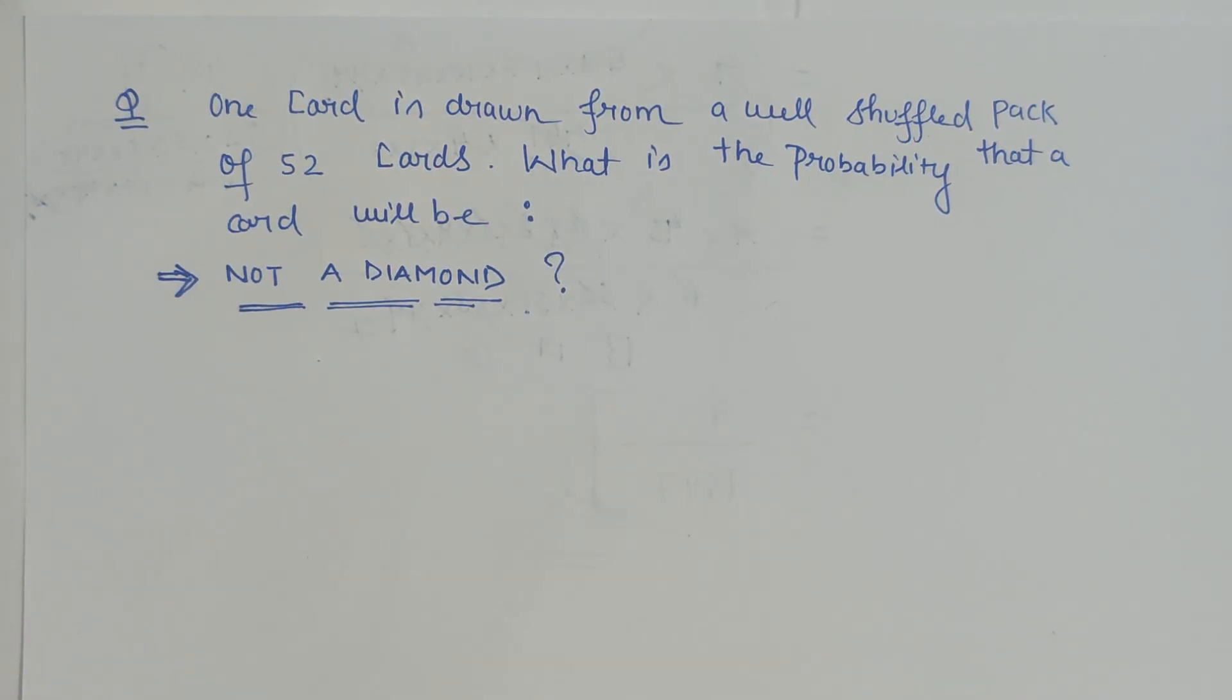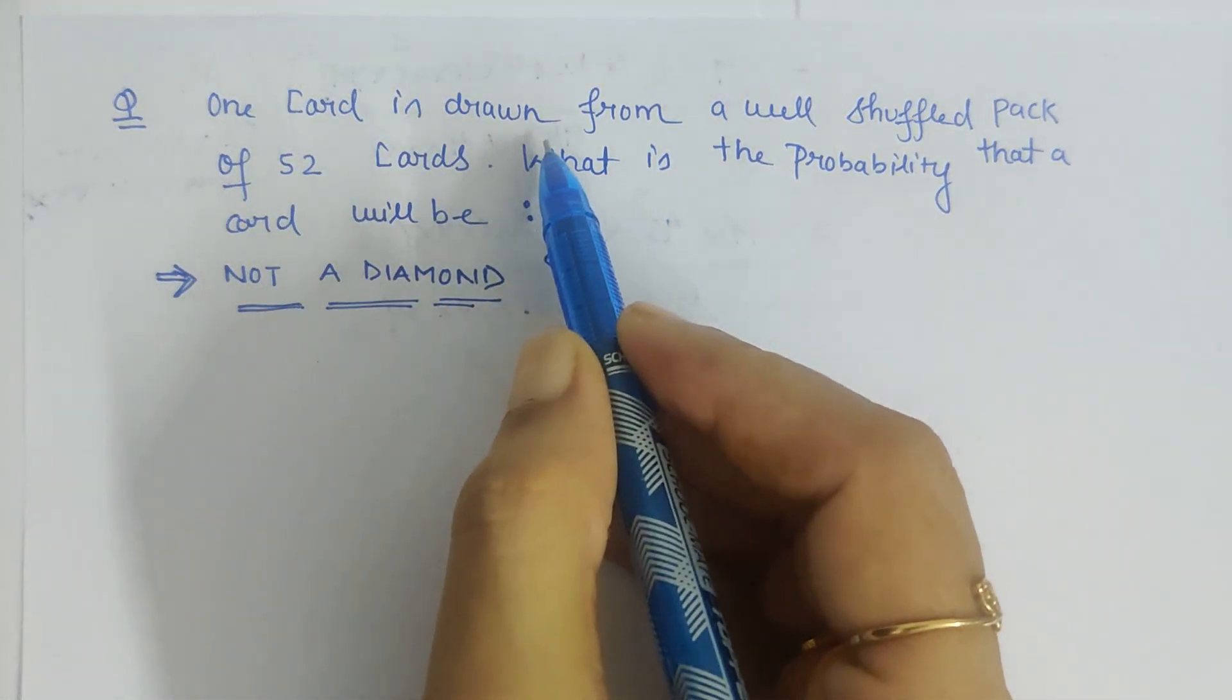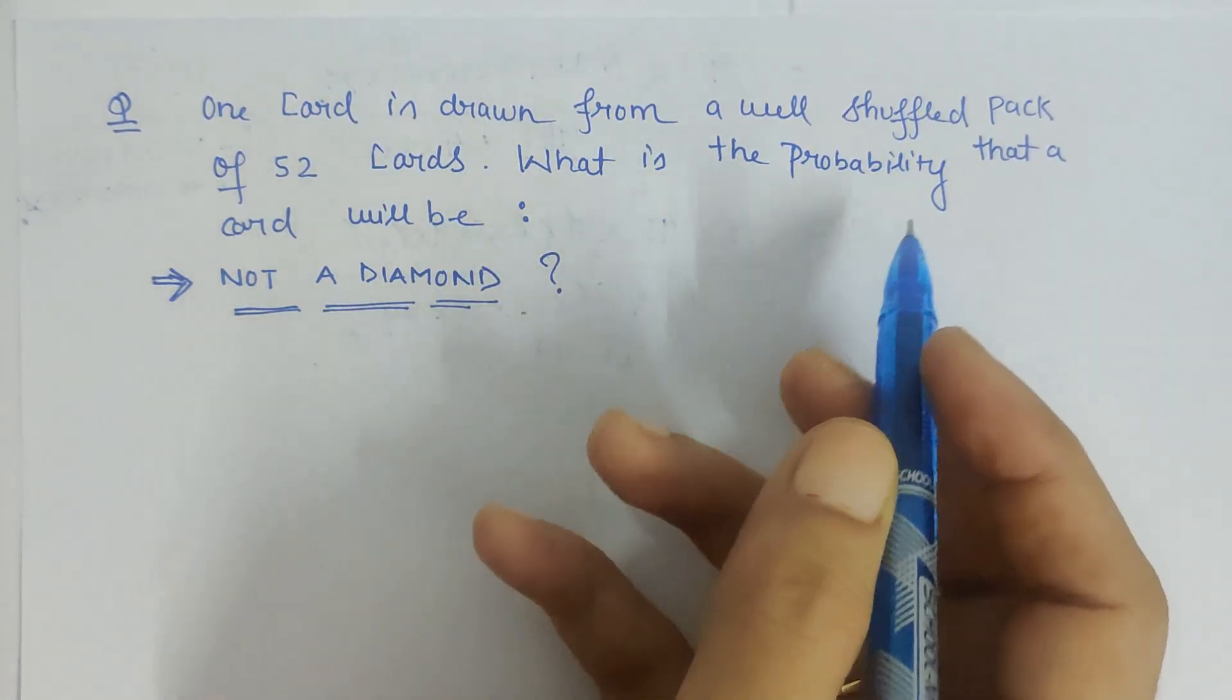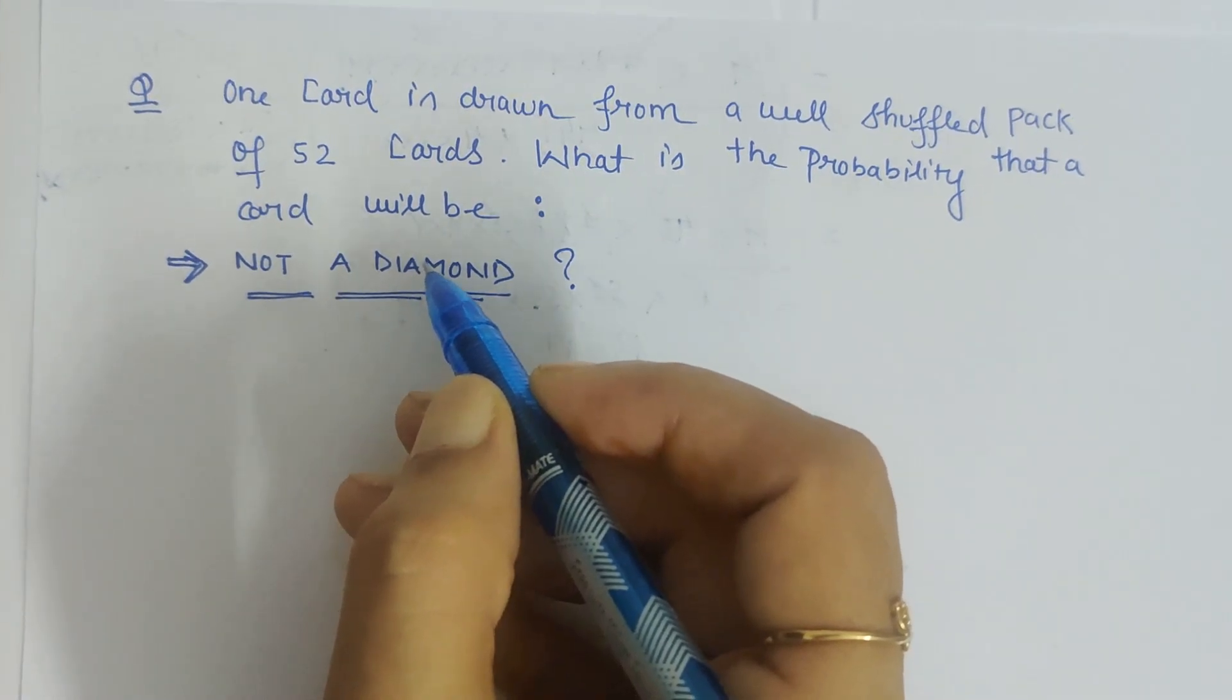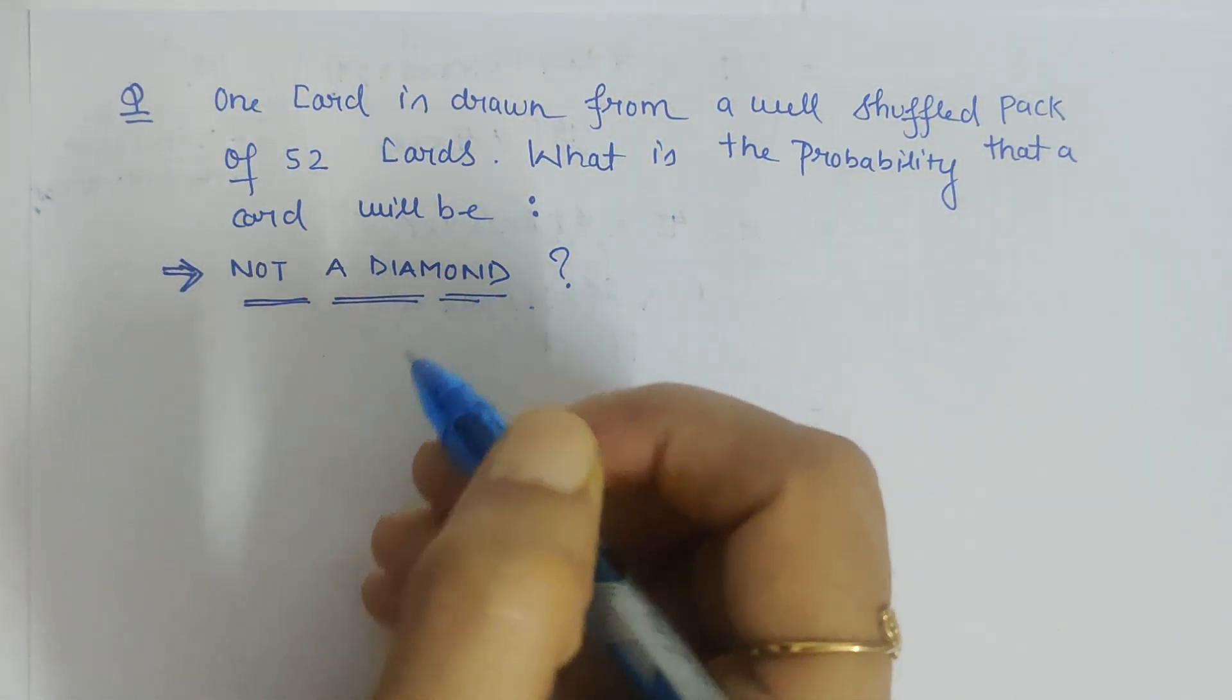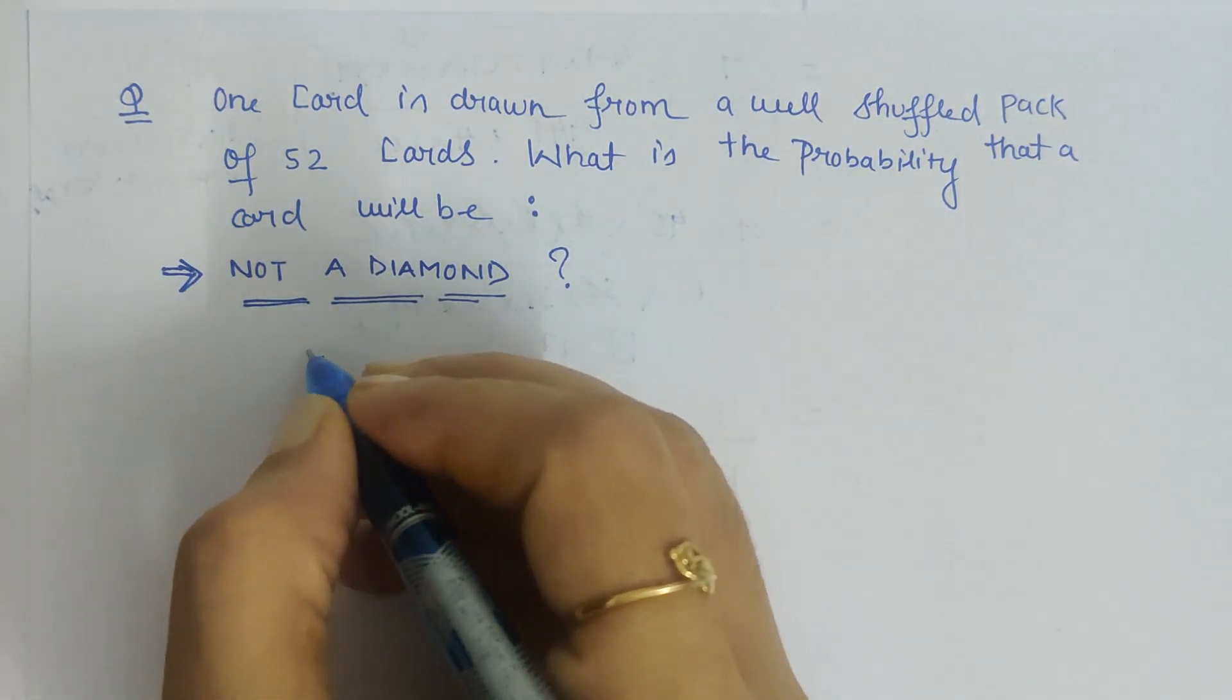Hello friends, here we have to find the probability that the card is not a diamond. The given condition is one card is drawn from a well-shuffled pack of 52 cards. So what is the probability that the card will not be a diamond? This we have to calculate.